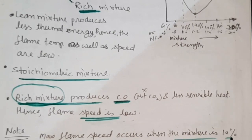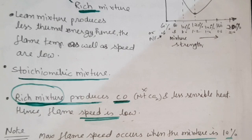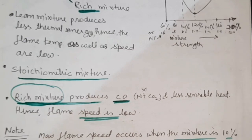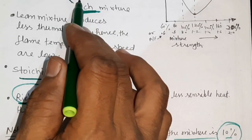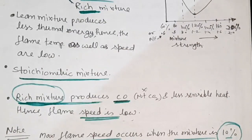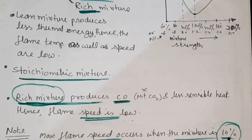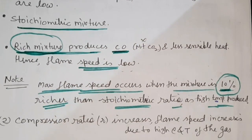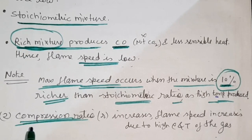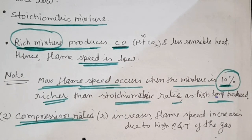Maximum flame speed occurs when the mixture is 10% richer than the stoichiometric ratio, as high temperature is produced in this condition. So the maximum flame speed will be at 10% higher amount of fuel compared to the stoichiometric ratio. To get maximum flame speed, increase the percentage of fuel by about 10%.